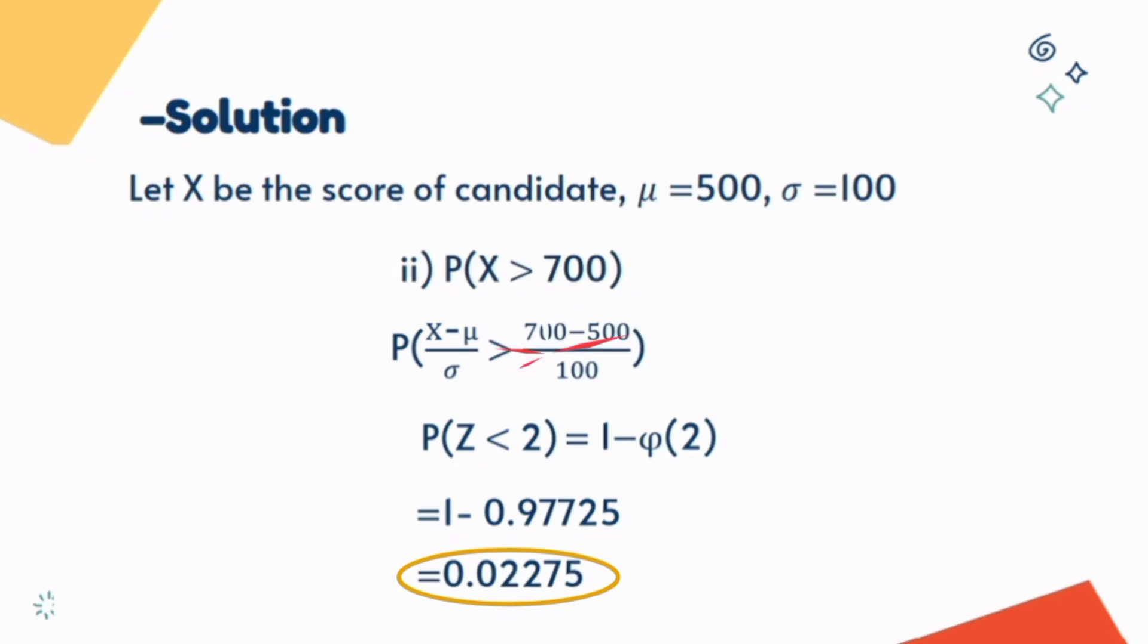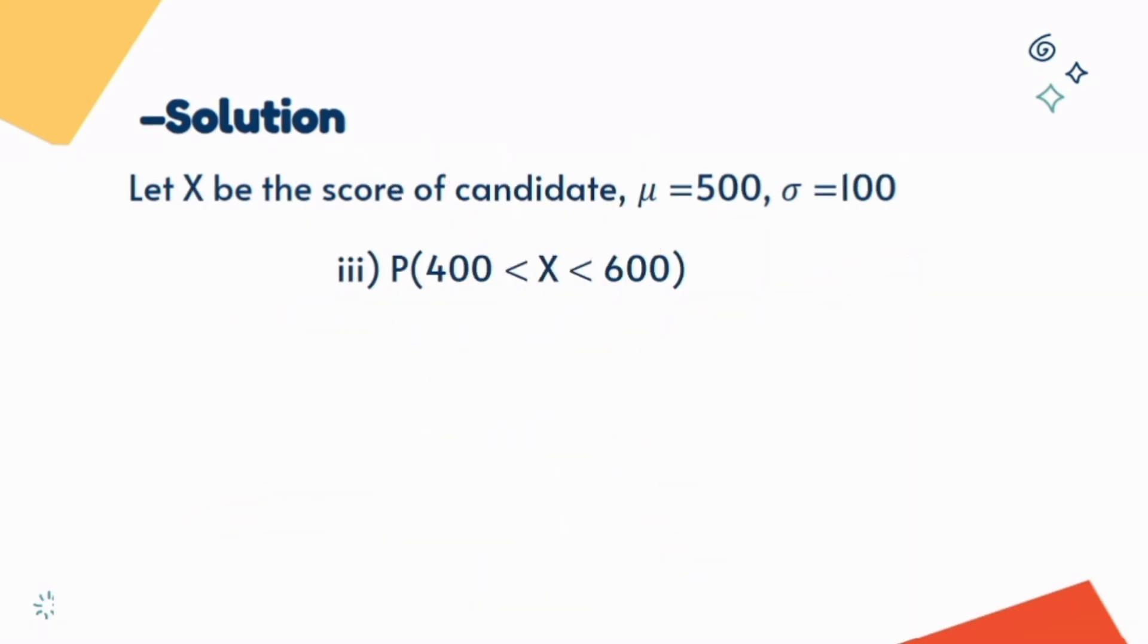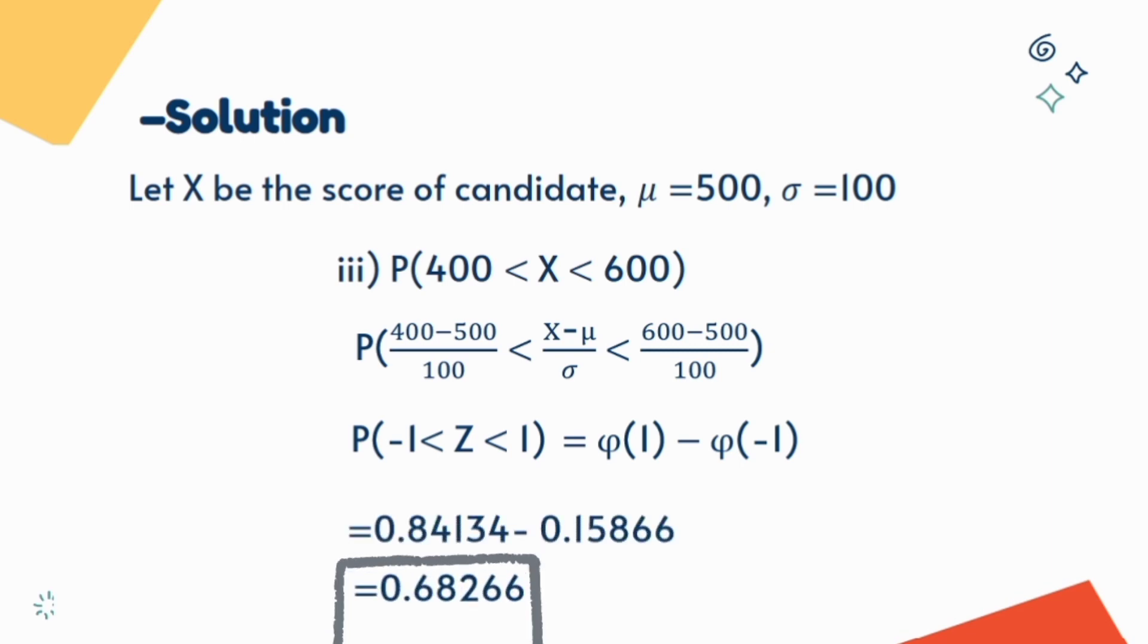And thirdly we have this situation. Again transform in Z. That is the case number three where we subtract the table value of smaller transform value from larger value. Tells us the chances to get between 400 and 600 marks are more than 68 percent.